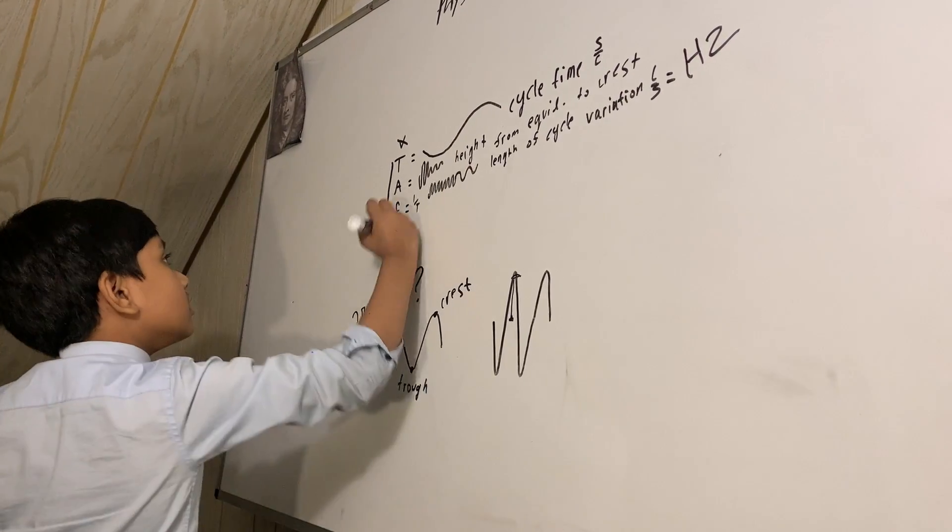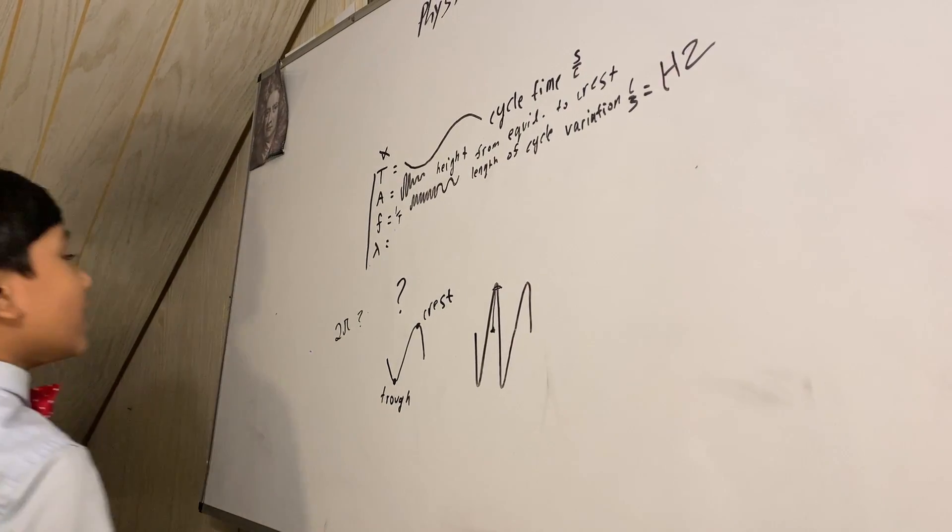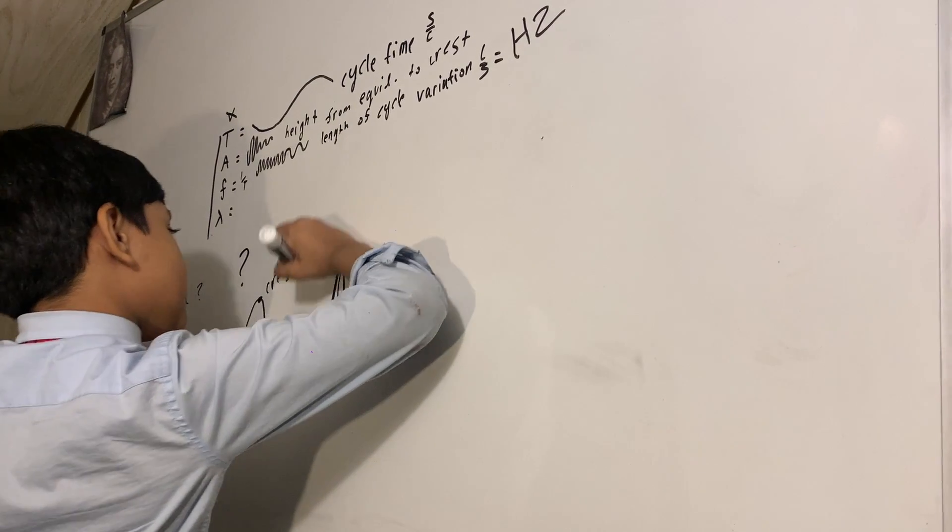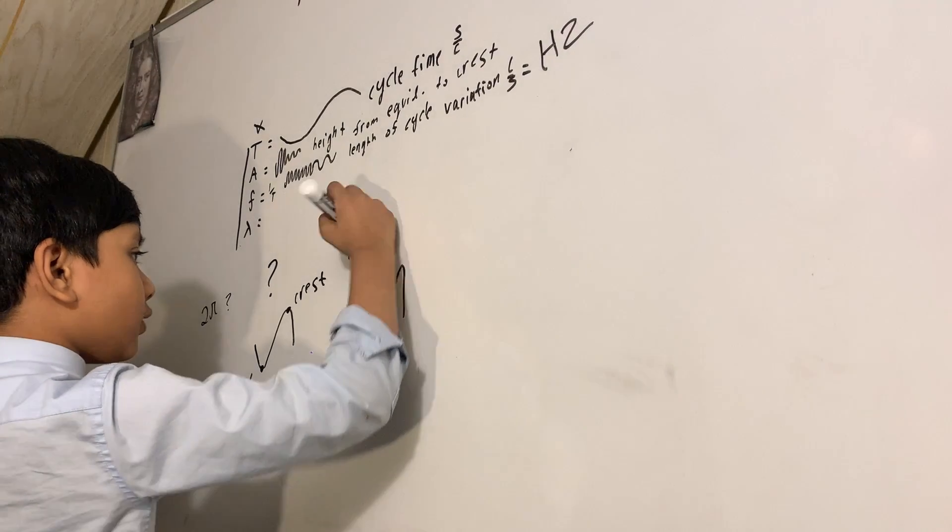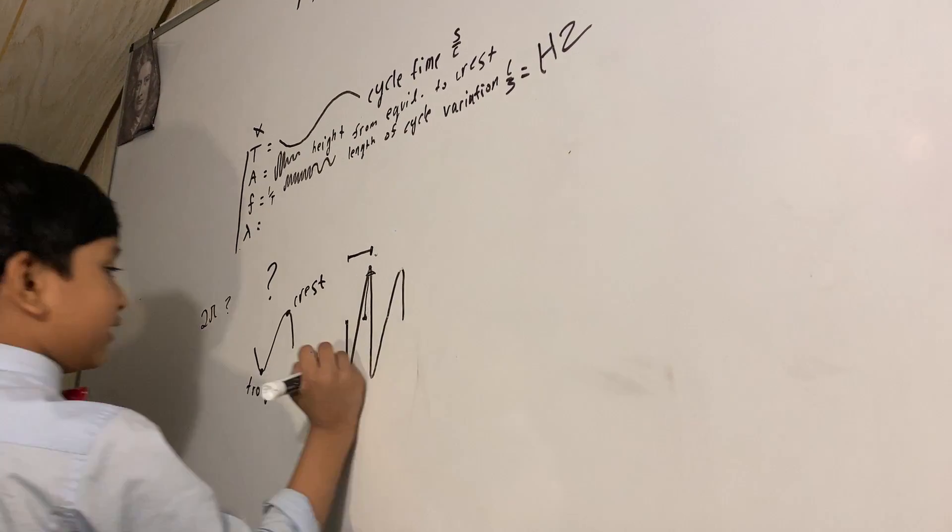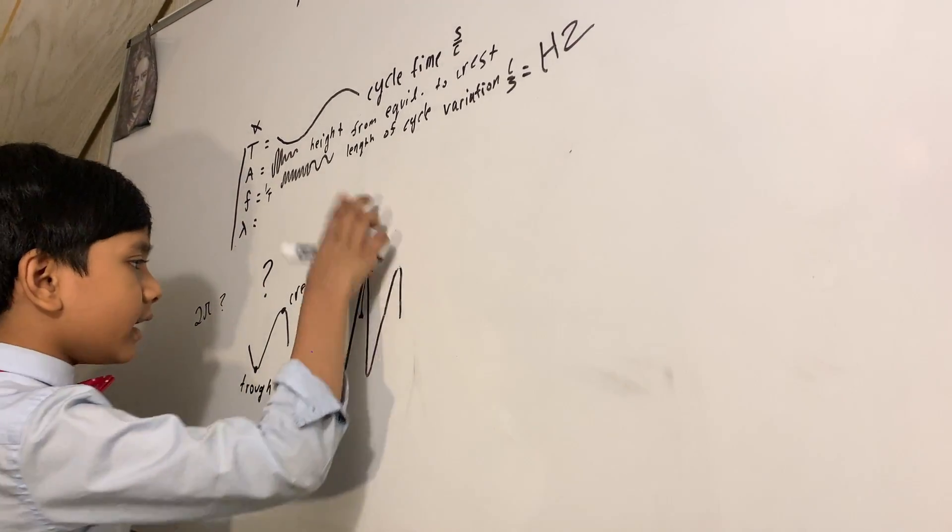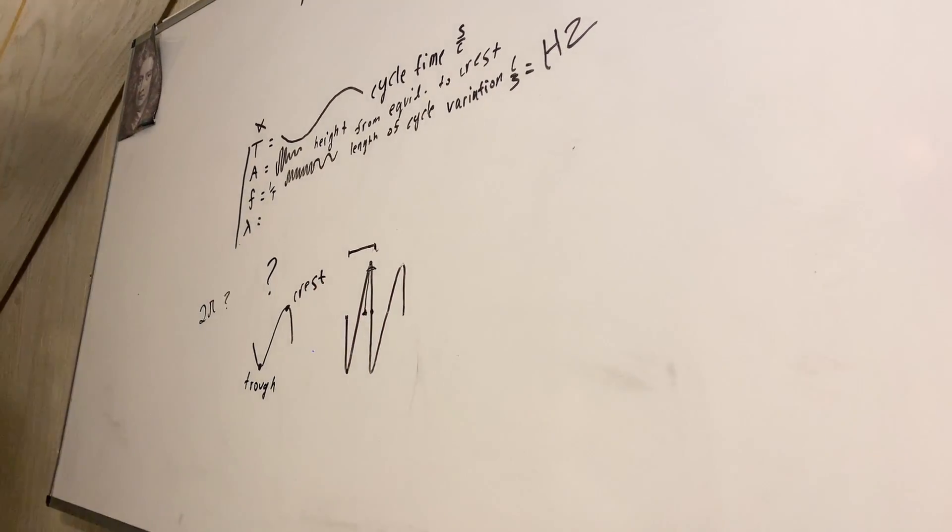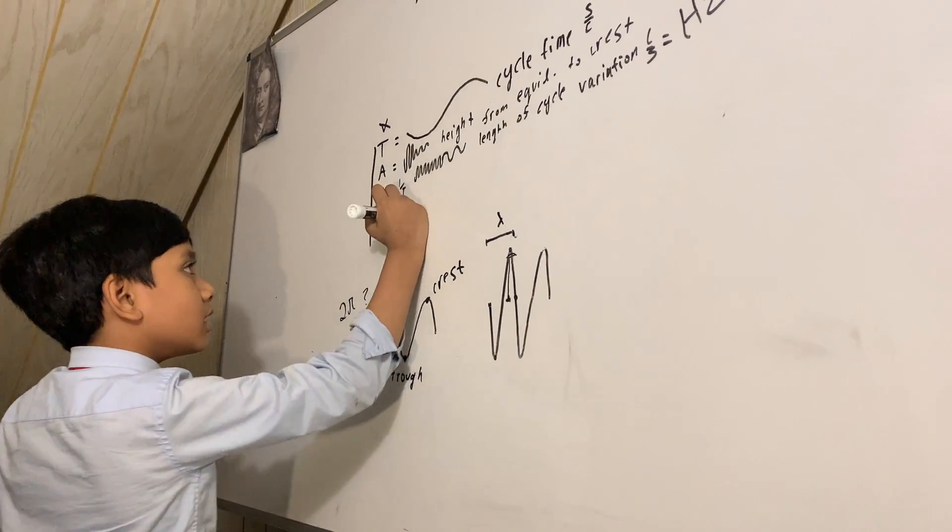Now we finally have lambda. What is lambda you may ask? It's the wavelength, the length between one trough and one crest combined. It's just the length of one cycle. It actually ends right here. That's one lambda and it varies due to frequency.